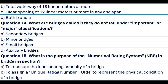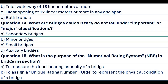Question 14. What are bridges called if they do not fall under important or major classifications? A. Secondary bridges. B. Minor bridges. C. Small bridges. D. Auxiliary bridges. Answer B. Minor bridges.